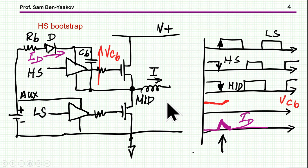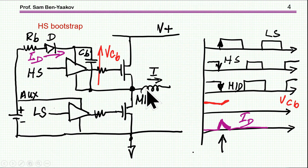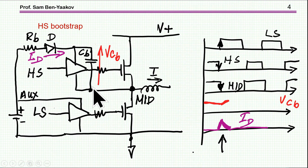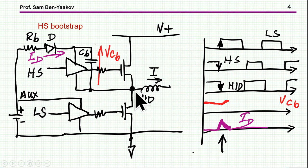Here is the bootstrap circuit. I am showing a half bridge — this is the load inductor. We have the low side and the high side. This capacitor is the one that feeds the high side driver. While the high side transistor is off and this voltage is high, this capacitor serves as the power supply for the high side driver.